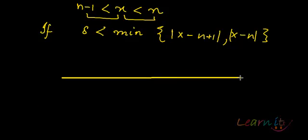Let us have a real line here. You can have integers 1, 2, 3, 4, and so on, on the negative side as well. Now, say your x lies here.